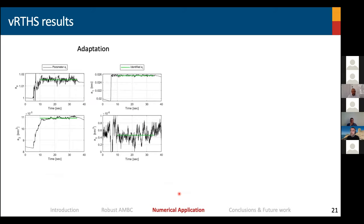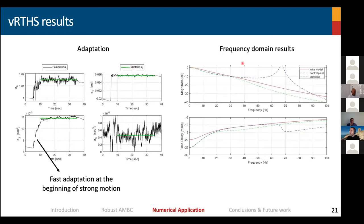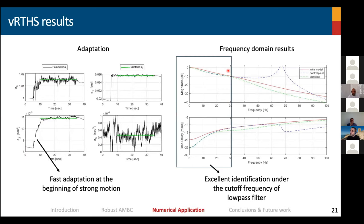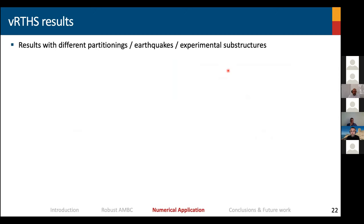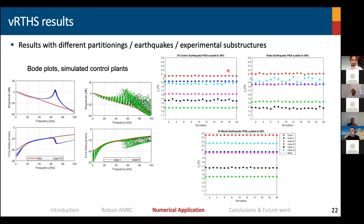Since I don't have much time, this figure shows a virtual RTHS test after we calibrated all our gains. You can see here that from parameters A0 to A3, when the simulation starts, we will have fast adaptation at the beginning of the strong motion, and then we will converge to the values that were identified for the case when we consider control-structure interaction. The red curve, which is the initial model, will go to the green curve, which is basically the control plant, but in the region of the cutoff frequency of the low-pass filter that we incorporated inside the adaptive controller.